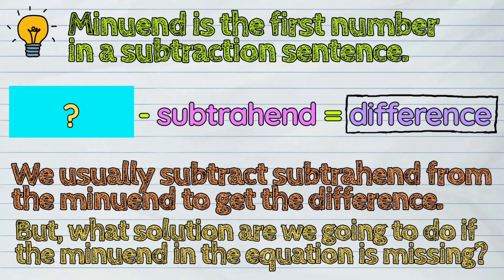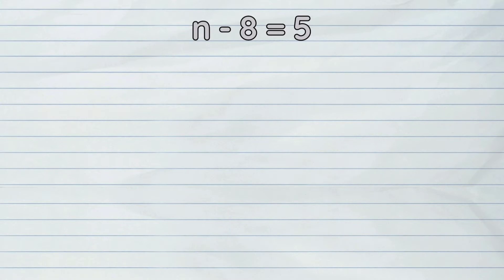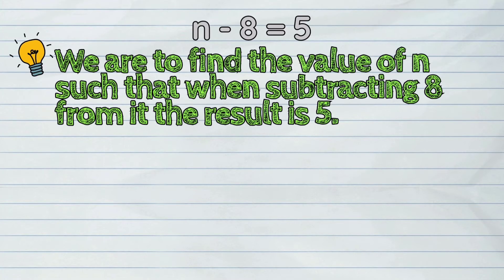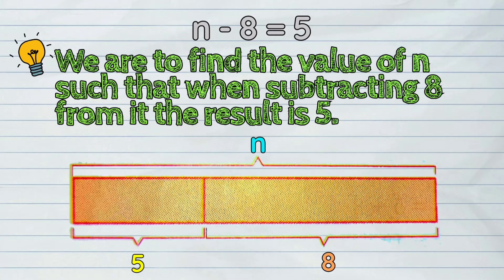Let's study this example. In the equation n minus 8 equals 5, we are to find the value of n such that when subtracting 8 from it, the result is 5. Take a look at the visual representation of the given equation.